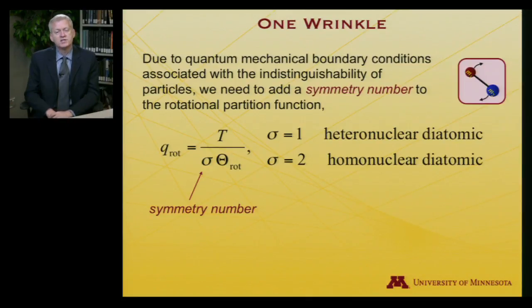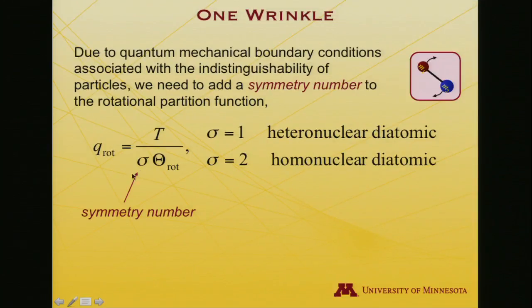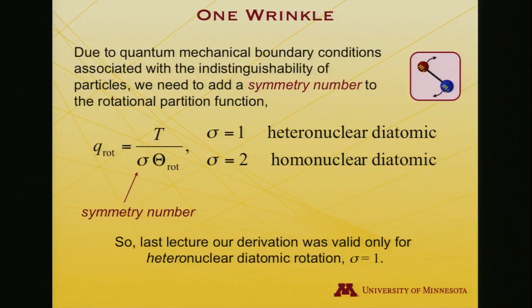It introduces something called the symmetry number into the rotational partition function. When we did our derivation last time, we ended up with the rotational partition function when the rotational temperature is much lower than the actual temperature was just T over theta rote. Now, in fact, this symmetry number should appear there, sigma, and sigma takes on a value of 1 for a heteronuclear diatomic, but it takes on a value of 2. The partition function is only half as large when it's a homonuclear diatomic. In fact, the derivation we did in the last lecture was valid for the heteronuclear, not for the homonuclear. We'll just take that as a given and use it in the future.